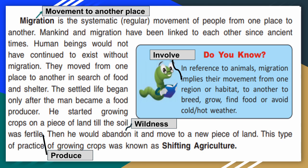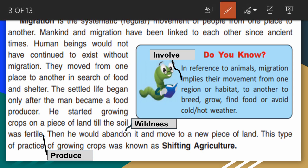Let us start reading. Migration is the systematic movement of people from one place to another. Mankind and migration have been linked to each other since ancient times. Human beings would not have continued to exist without migration. They moved from one place to another in search of food and shelter. The settled life began only after man became a food producer. He started growing crops on a piece of land till the soil was fertile.